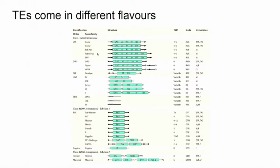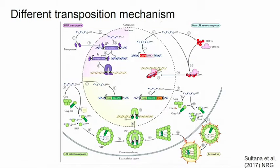Transposable elements come in many different flavors. There are DNA transposons — many different types — and RNA transposons, where I can distinguish between long-terminal repeat transposons and non-long-terminal repeat transposons. This is not just fun with classification; these things actually have a very different mechanism of spreading.